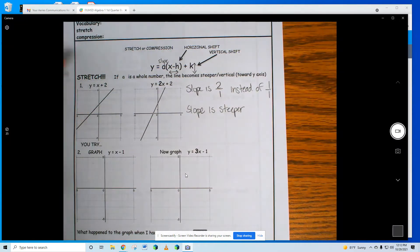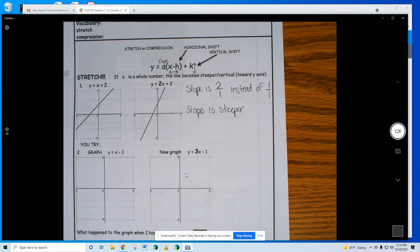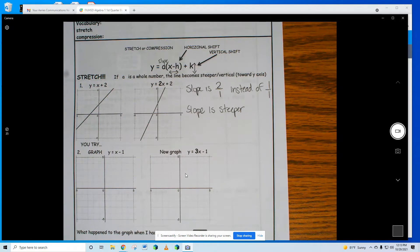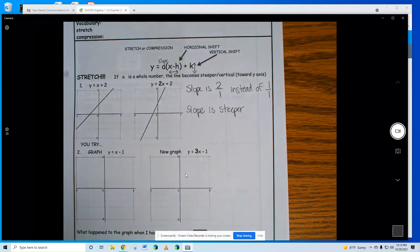All right, so here we go. I have a slope that's steeper. So when there's a whole number we call this a stretch. A stretch makes my line steeper. A 2, a 3, or 4 in front, right after the equal sign, is going to be a steeper.